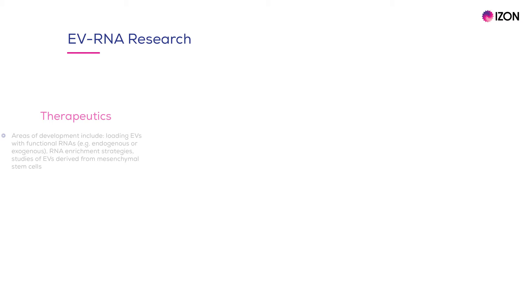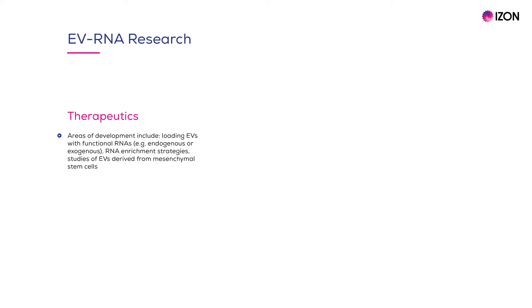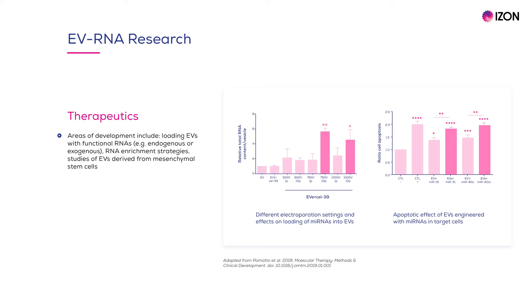Depending on the context, the development of EV-based therapeutics may require progress in a range of areas. For example, process development for large volume EV separation, and strategies for enriching and loading functional RNA into EVs. Other areas include strategies for enhancing cell targeting and uptake, and the selection of an appropriate vehicle EV if native EV RNA is not used. In this example, electroporation was used to exogenously load microRNAs into EVs, and specific electroporation settings were identified which enhanced loading efficiency. Consecutive experiments assessing apoptosis of cancer cells treated with the engineered EVs corroborated the anticancer effect of these microRNAs loaded into EVs.